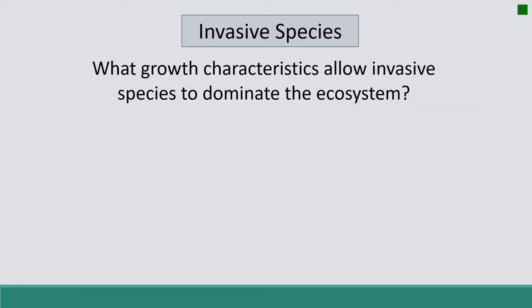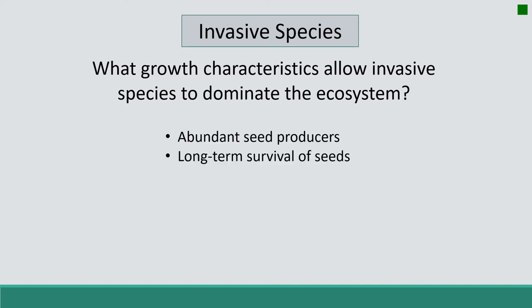Think for a moment about some of the growth characteristics that allow invasive species to dominate an ecosystem. Some of the characteristics include that they are abundant seed producers. Russian thistle, which is an invasive species, can produce over 200,000 seeds per plant.